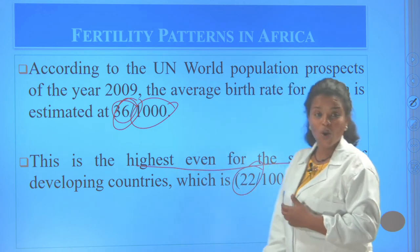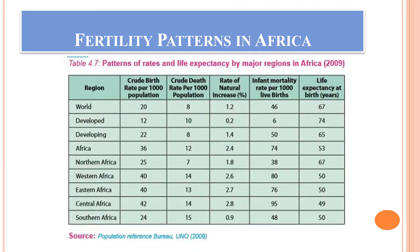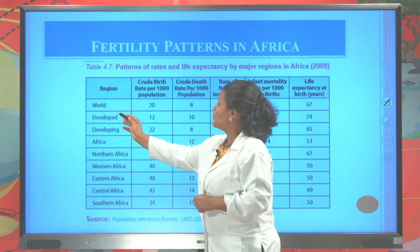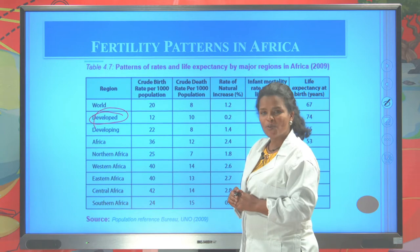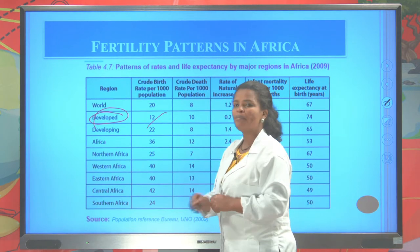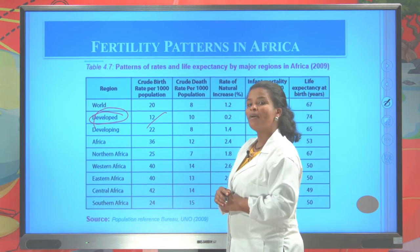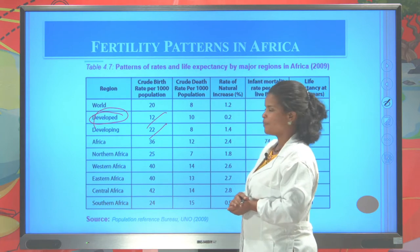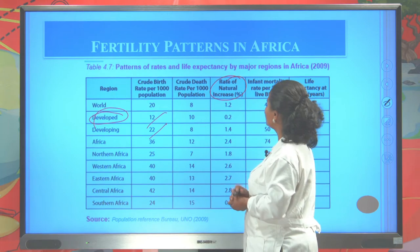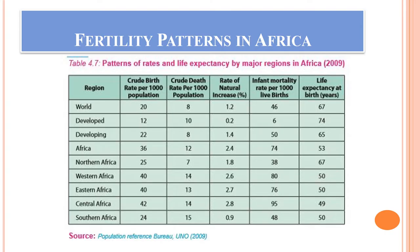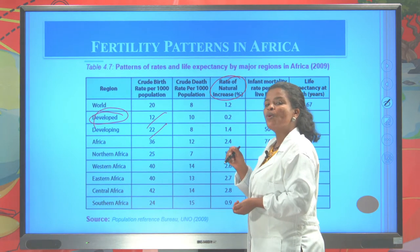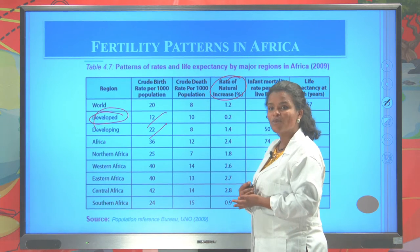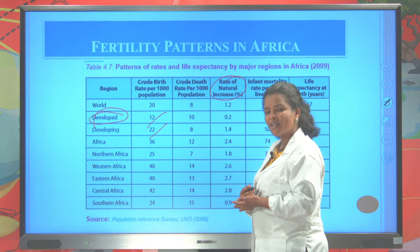Fertility rate is very high in Africa and also in Ethiopia. The crude birth rate of developed countries is 12 per thousand, while in developing countries birth rate is 22 per thousand. The rate of natural increase in Africa and developing countries is also high. Infant mortality rate in developing countries is very high — infant mortality rate means the deaths of children below one year.